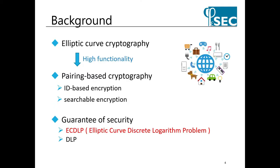Pairing-based cryptography is an advanced version of elliptic curve cryptography. It enables many innovative and multifunction cryptographic applications, such as ID-based encryption and searchable encryption. One of the securities of pairing-based cryptography is guaranteed by ECDLP. If ECDLP is solved, the security needs to be re-verified. ECDLP will be explained later.